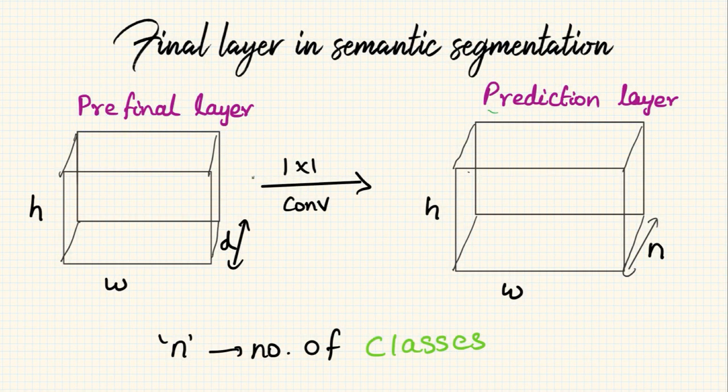Another area where one by one convolutions are widely used is in case of the final layer of semantic segmentation algorithms. Basically in the prediction layer, the output has a dimension similar to that of an image. So you have a height, width, and n is generally the number of classes in that particular dataset. So in order to modify the channel dimension to match with that of the number of classes, a one by one convolution is used.